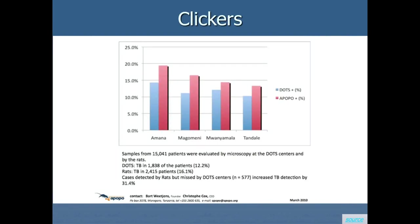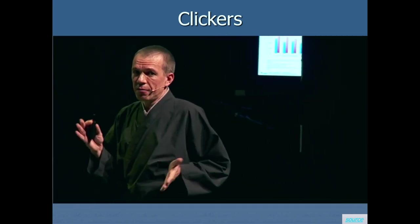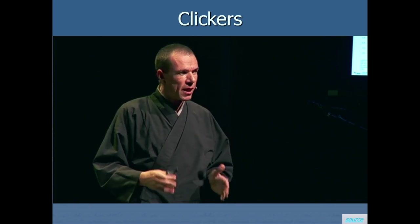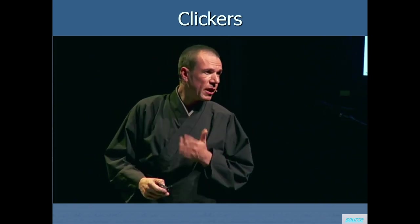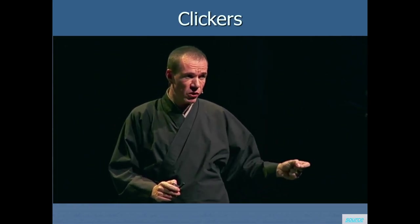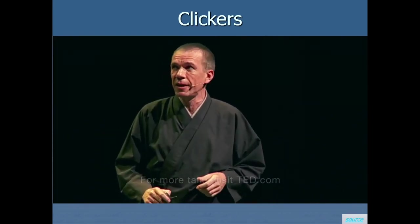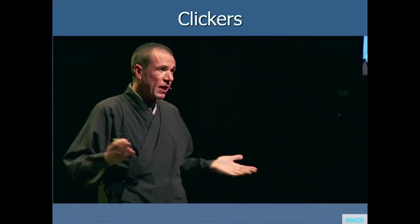In five clinics in Dar es Salaam serving a population of 500,000 people, 15,000 reported for testing. Microscopy found 1,800 patients, but by presenting those same samples once more to the rats and looping results back, the team increased case detection rates by over 30%. Consistently throughout last year, they increased case detection between 30% and 40% across five hospitals. Knowing that a missed TB patient infects up to 15 healthy people per year, they have saved many lives.